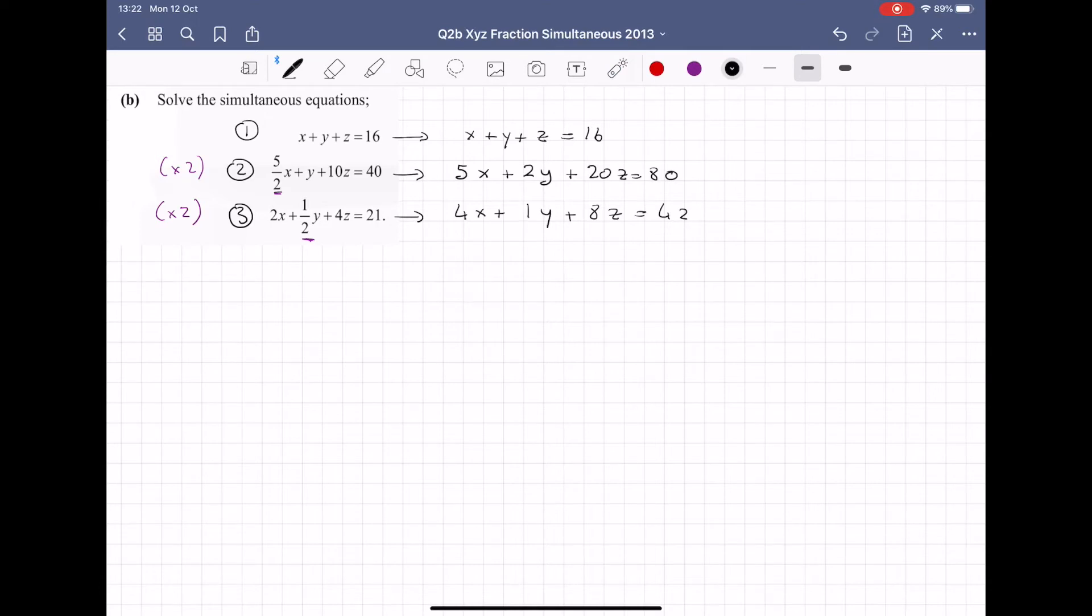So now this is my equation 1, my equation 2 and my equation 3. So from now on, I tend to just look at my equations written in this form as opposed to the fractions. And then all of a sudden now it's looking a whole lot easier than the question we were given in the exam. So your next job is to figure out which letter are you going to cancel. Are you going to cancel the x's, the y's or the z's? It doesn't matter.